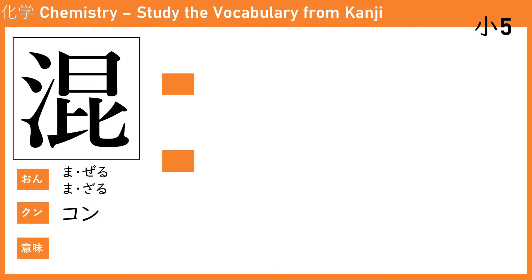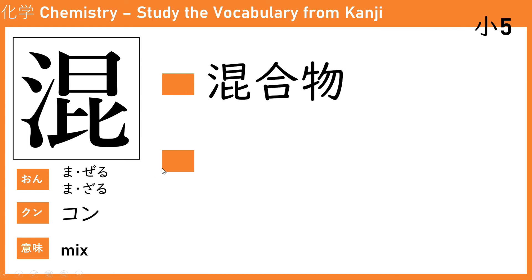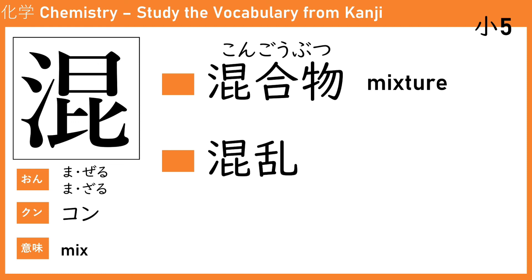The next kanji is 混 (kon). The kunyomi is 混ざる (mazaru), which means to mix. The first word is 混合物 (kon-gou-butsu), meaning mixture — for example a mixture of sand and water. We also have 混乱 (kon-ran), which means confused. If you have many tasks and don't know where to start, you are in 混乱状態 — a confused state.